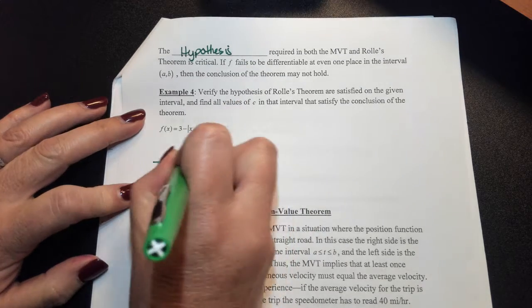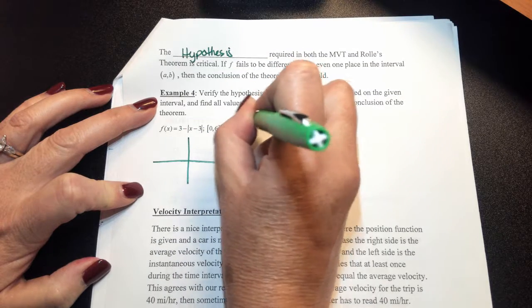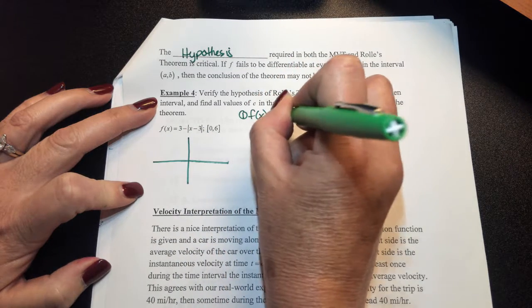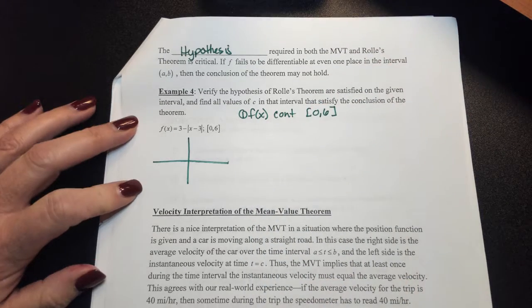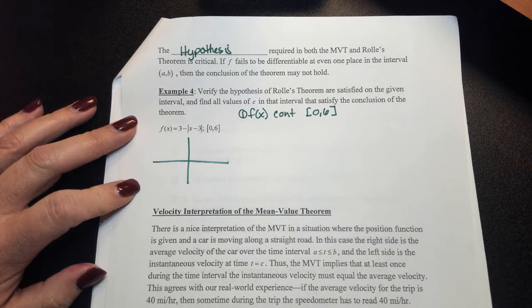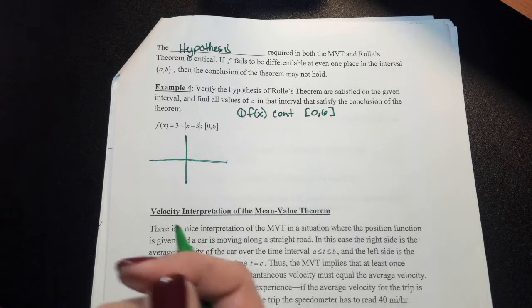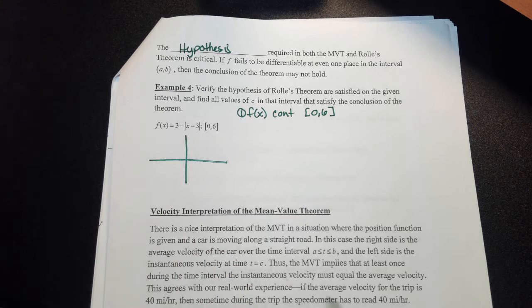We know it passes that it's continuous. We know it's continuous from 0 to 6. But the thing you also have to check is the differentiability.